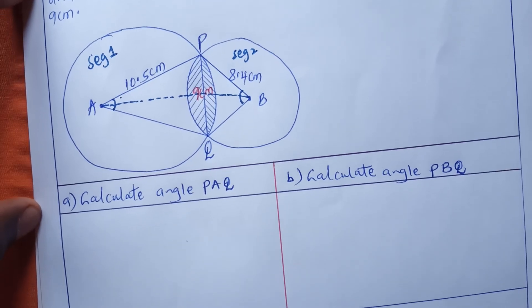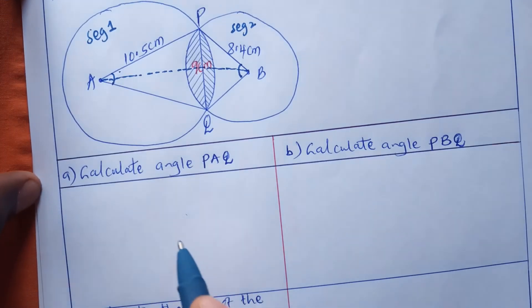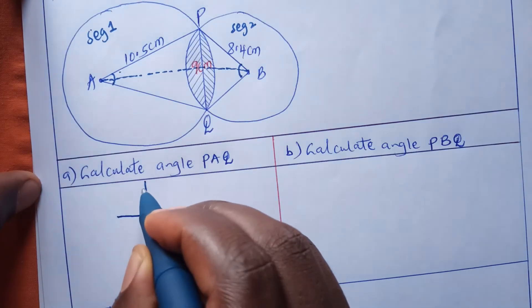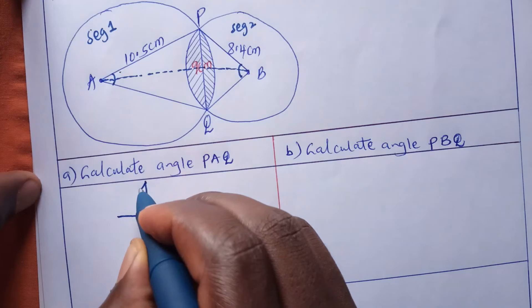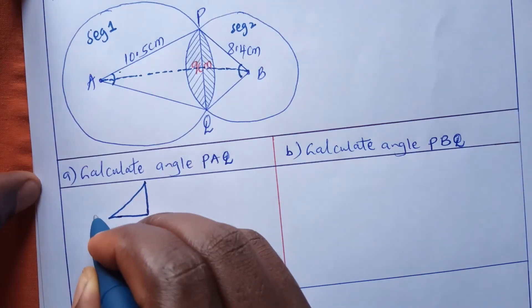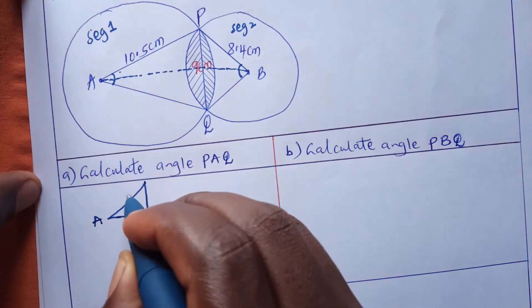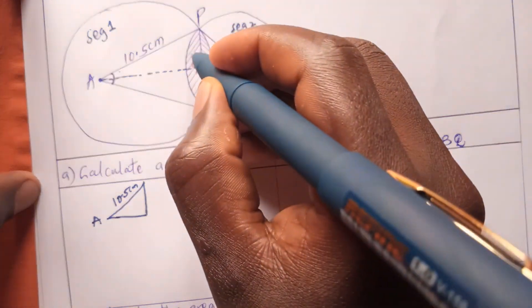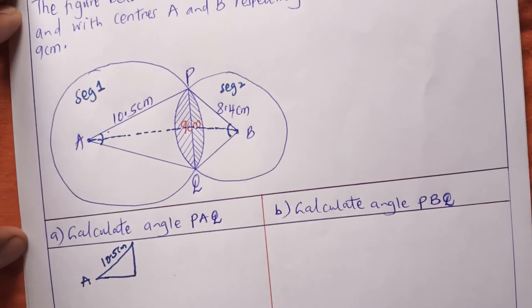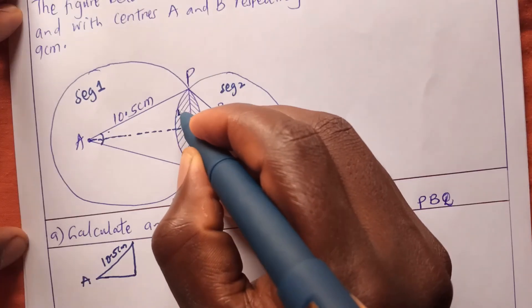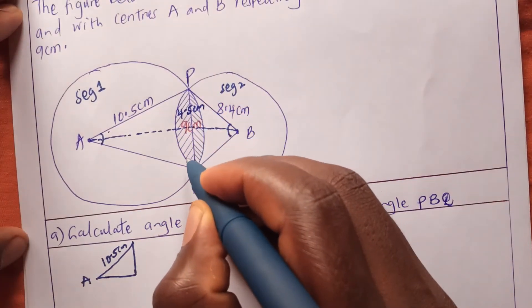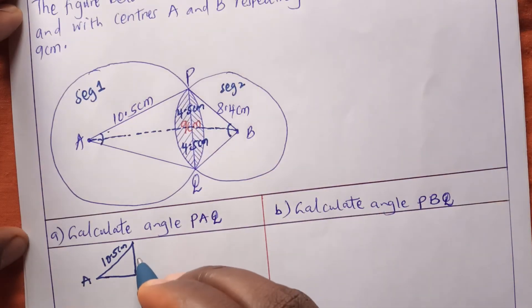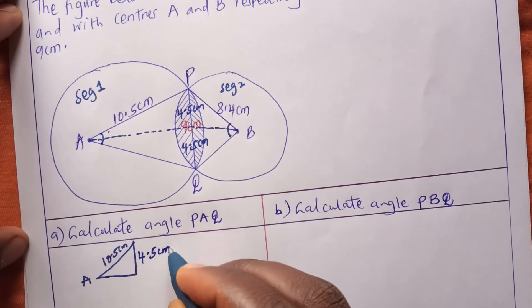We extract the right angle triangle like this. We are interested in angle A. The hypotenuse is 10.5 centimeters, which is the radius. Half of 9 is 4.5 centimeters, so the opposite side is 4.5 centimeters.